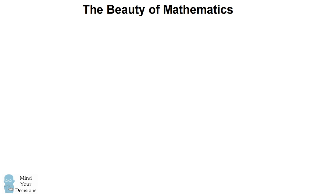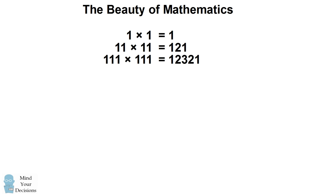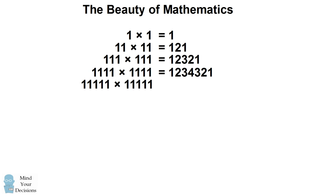Hi, this is Presh Talwalkar. There's an interesting pattern if you multiply a number that has only 1's by itself. If you multiply a number that has five 1's in it by itself, you'll count up to the number 5 in order, and then you'll count back down to 1 to create a palindrome of the numbers in ascending and then descending order.